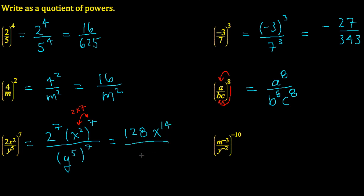And finally, I'll apply the same rule to y to the exponent 5 to the 7. I will do 5 times 7 to get my finishing exponent, which is 35. Last one, it even works with our negative exponents. I would write this as m to the exponent negative 3 raised to the exponent negative 10, divided by y to the exponent negative 2 raised to the exponent negative 10.